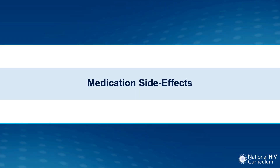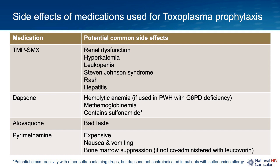Let's go over common side effects associated with medications used for toxoplasma prophylaxis. This table shows the most commonly seen side effects. With TMP-SMX, you may see renal dysfunction, hyperkalemia, leukopenia (particularly neutropenia), hepatitis or transaminitis. Individuals might get a mild rash with TMP-SMX, or on the more severe spectrum, Stevens-Johnson syndrome.